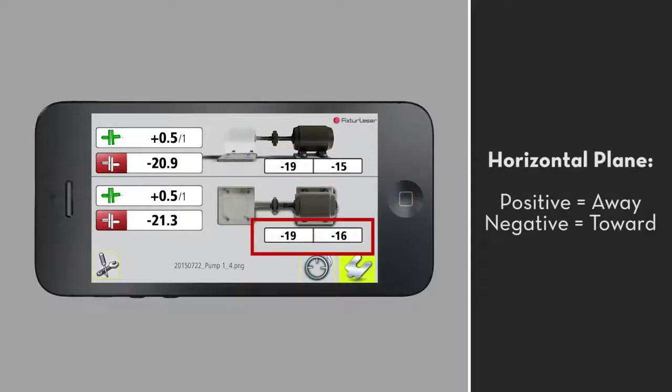In the horizontal plane, positive values mean that the feet are sitting away from you. Negative values mean that the feet are sitting towards you.